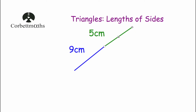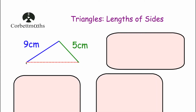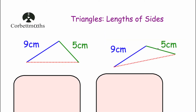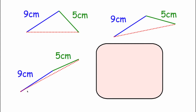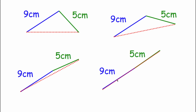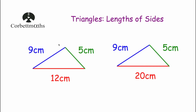The largest the third side could be is just before the two lines form a straight line. If we have 9cm and 5cm in a straight line, the length of the joining line would be 14cm, but it can't actually be 14cm since that wouldn't be a triangle. So the third side can be anything up to but not including 14cm. Going back to our triangles, the 12cm side is possible, but 20cm is far too large — so that triangle is impossible.